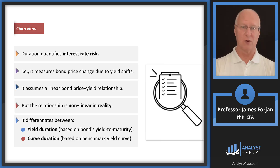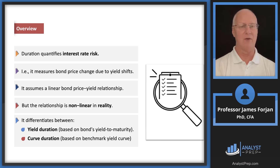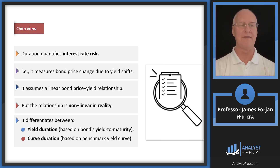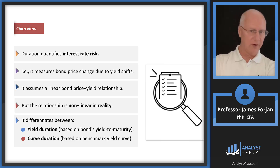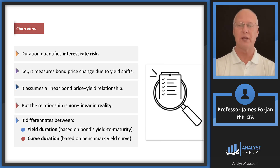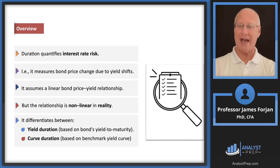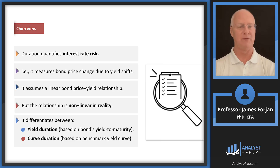In the next learning module, we're going to cover convexity, which looks at the non-linearity of that relationship, and we'll compute what's known as a convexity adjustment. Notice the fourth gray box: the relationship is non-linear, so we have to make a convexity adjustment — that's for a future conversation, but keep it in the back of your mind.